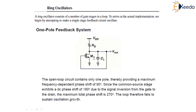The loop therefore fails to sustain oscillation. As we have already seen in the earlier lecture, for oscillation to grow, we need a phase shift of 360 degrees. But in this common source stage having a one pole feedback system, the total phase shift is only 270 degrees. So this particular one pole feedback system loop fails to have sustained oscillation growth.